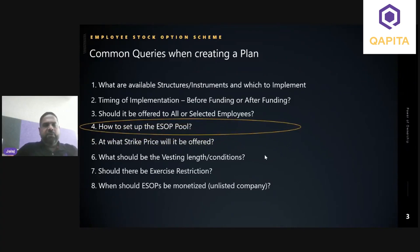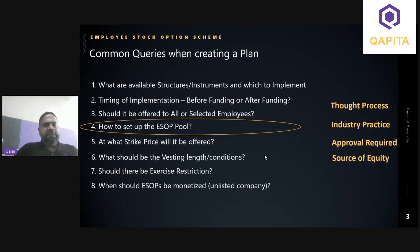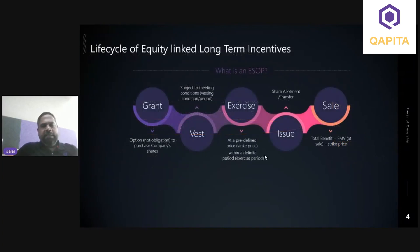This session will concentrate on setting up an ESOP pool. We'll cover the thought process associated with setting the ESOP route, industry practice for both listed and unlisted companies, required approvals, and the source of equity. For context, everyone should be aware of the lifecycle of an equity-linked instrument. There are basically five events captured in the lifecycle, starting with the granting of the option.